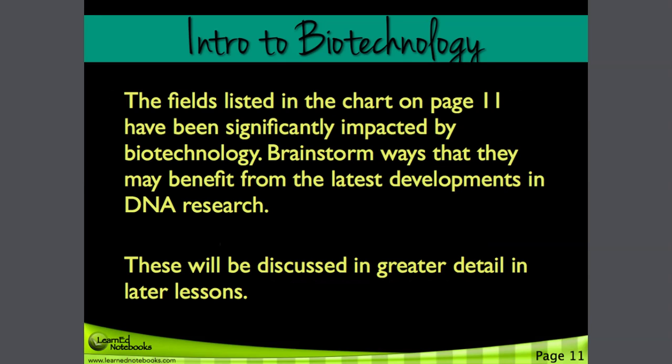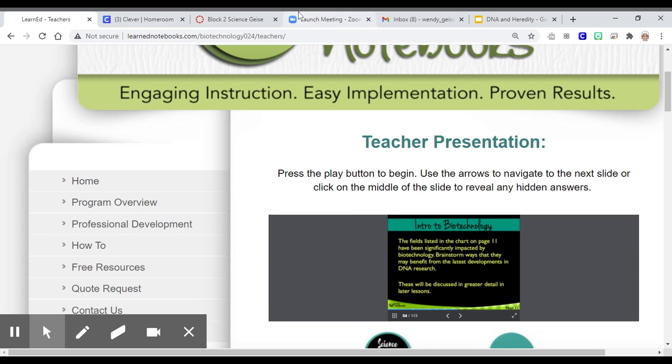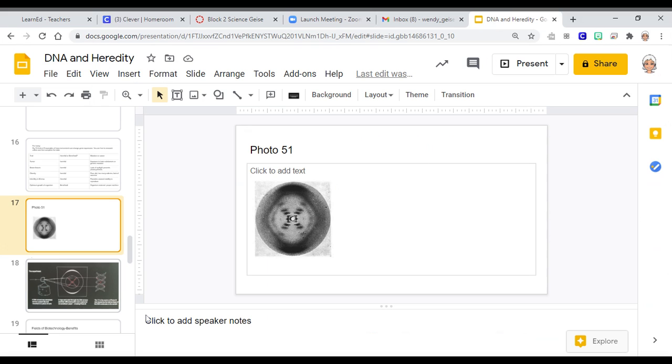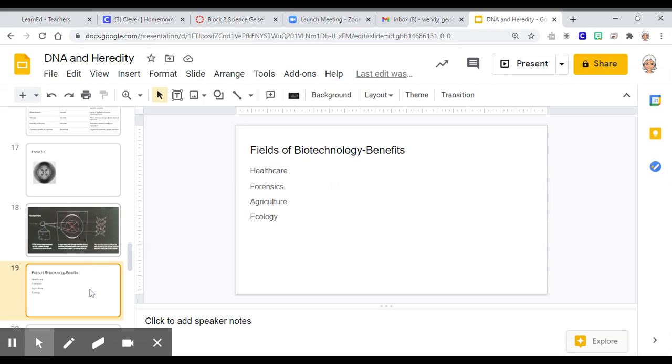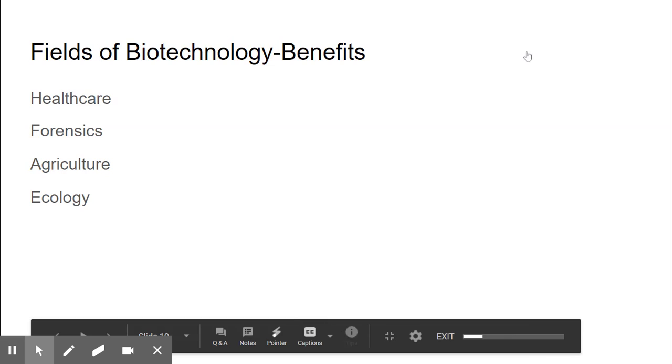We're going to talk today about the main fields of biotechnology at the bottom of page 11, which are healthcare, forensic science, agriculture, and ecology. I'm going to switch slides here and go to my slideshow, and we're going to look at those fields together.